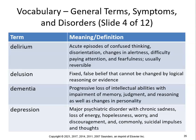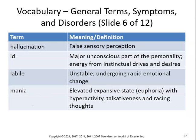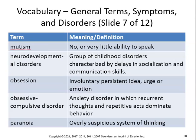Major depressive disorder involves chronic sadness, loss of energy, helplessness, worry, discouragement, and commonly suicidal impulses and thoughts. Dissociative disorder involves conditions with a breakdown in memory, identity, or perceptions. Ego is the central coordinating branch of personality or mind. Fugue is an unconscious flight from customary surroundings. Gender identity disorder involves strong and persistent cross-gender identification that causes clinically significant distress. Hallucinations are false sensory perceptions. The id is the major unconscious part of the personality — energy from instinctual drives and desires. Labile means unstable, undergoing rapid emotional change. Mania is an elevated expansive state of euphoria with hyperactivity, talkativeness, and racing thoughts.